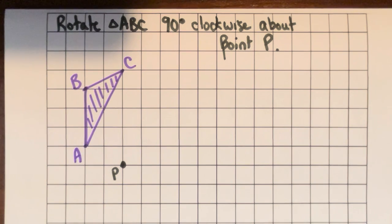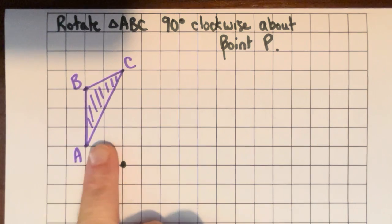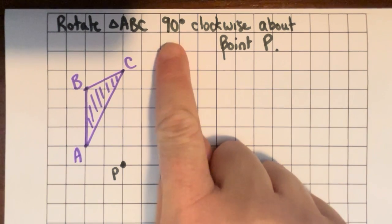Okay, we're going to look at how to do a rotation with tracing paper, about right here. This question is asking us to rotate triangle ABC, this purple triangle, 90 degrees clockwise,